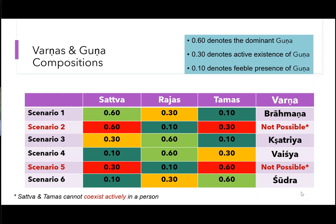These are the 6 scenarios from the other table. Scenario 1: Sattva is very high, followed by Rajas, and Tamas is almost non-existent. Don't worry about the exact numbers — just understand dominant, active existence, and feeble existence. Replace 60, 30, 10 with dominant, active existence, and feeble existence.